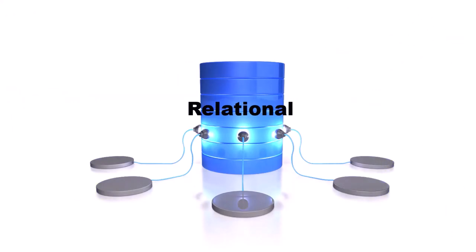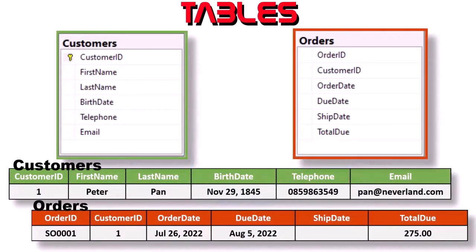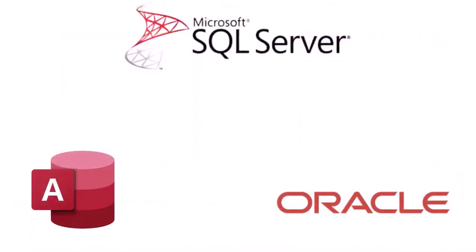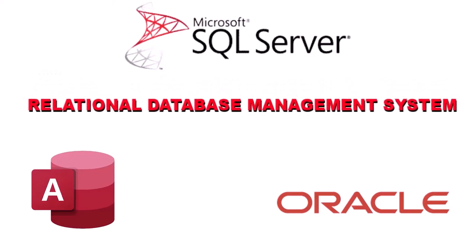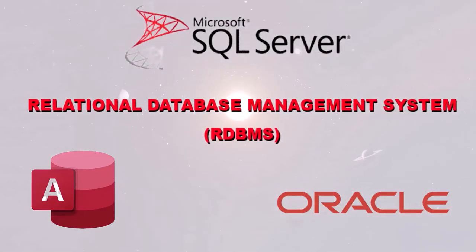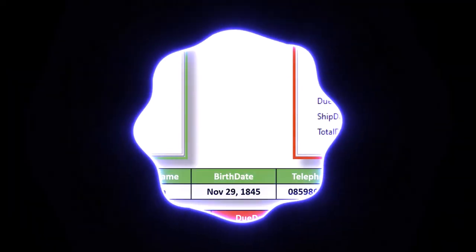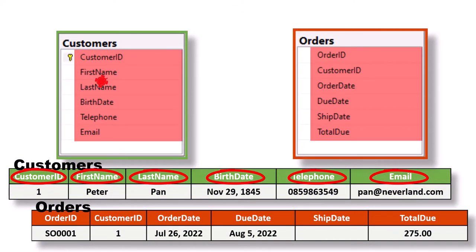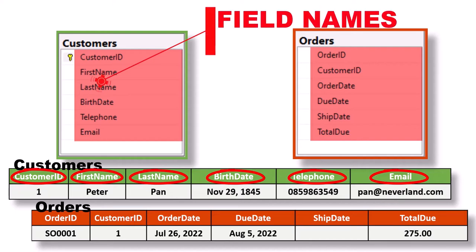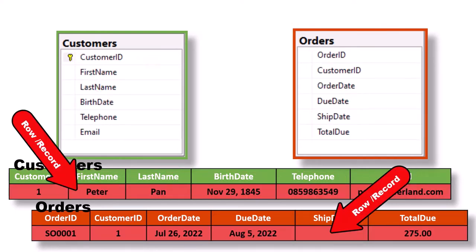A relational database uses containers called tables to store captured data. This type of format is often referred to as a tabular schema. Software that maintains relational databases is often referred to as a relational database management system, or RDBMS for short. The copy of SQL Server you downloaded and installed is an example of a relational database management system. Tables are created with fields or columns, also called field names, and each row is a record of data that represents an entity or data of that table.